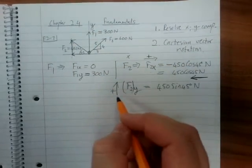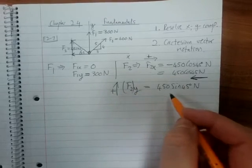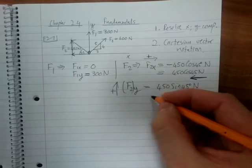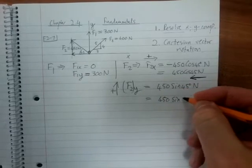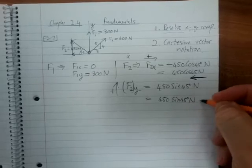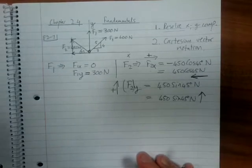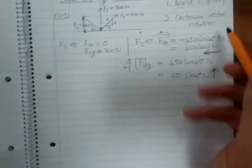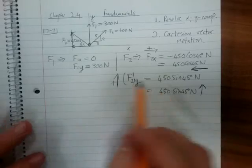It is in the same direction as positive Y, so we choose Y positive in that direction. F2Y is 450 sine, or we can say similarly 450 sine 45 Newton positive direction. So there we go, we've resolved it into the XY components.